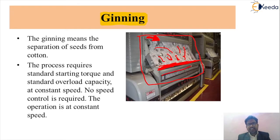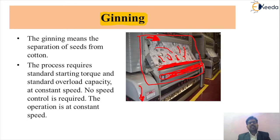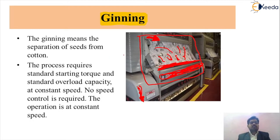In the ginning process, the different types of cotton material are obtained from the device, and purely separated cotton is pulled out by means of this mechanism. By this process we are separating the different types of cotton seeds and getting only the cotton, which is the raw material required for the textile industry.